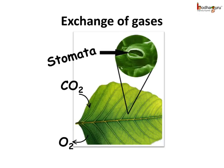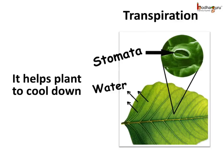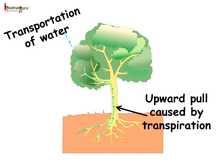Besides making food, the leaves perform some other tasks too. The leaves are full of tiny openings which are called stomata. The stomata are used to exchange gases with the environment, like absorbing carbon dioxide and releasing oxygen gas. The plants also release water vapour through the transpiration process through the stomata. Transpiration helps the plants to cool down. When the leaves lose water during transpiration, the roots absorb water to make up for it, and minerals come into the plant along with the water. This upward pull for the transportation of water and minerals is caused by the transpiration process.